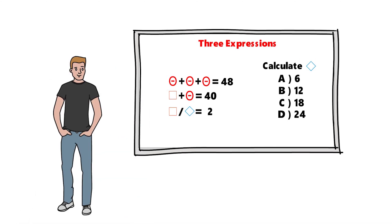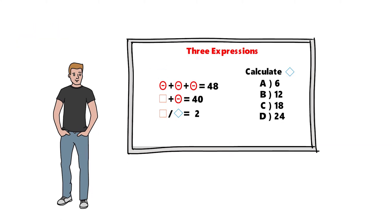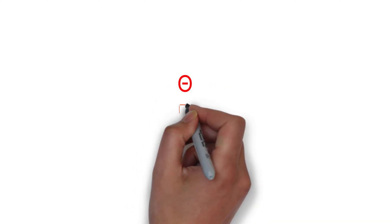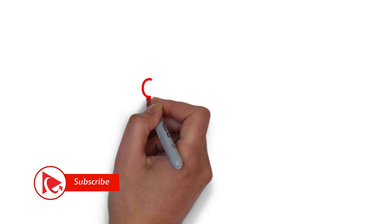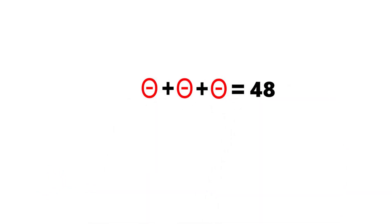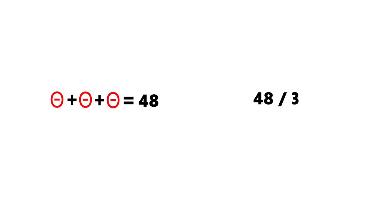Give yourself 10 to 15 seconds, maybe 20 to 30 seconds. The symbols presented are no different from X, Y, and Z in math. From the first expression, the value of the circle can easily be calculated by dividing 48 by 3, and the result equals 16. So circle with a dot inside equals 16.